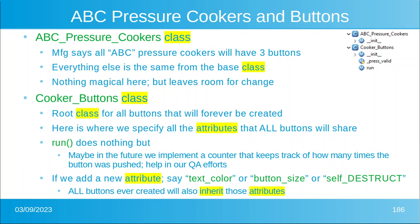If we add a new attribute — like text color, button size, or maybe a self-destruct button — all buttons ever created will also inherit those attributes. And again, that's why we do it.